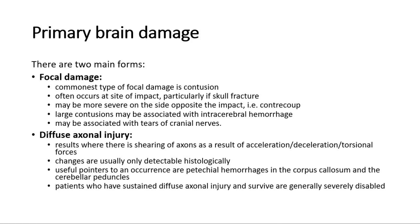Diffuse axonal injury results where there is shearing of axons as a result of acceleration, deceleration, or torsional forces. Changes are usually only detectable histologically. Useful pointers to its occurrence are petechial hemorrhages in the corpus callosum and the cerebellar peduncles. Patients who have sustained diffuse axonal injury and survive are generally severely disabled.